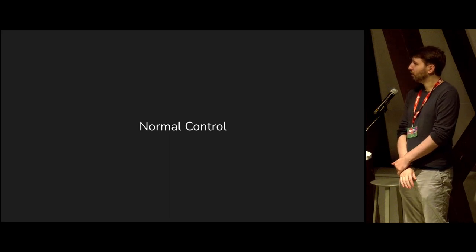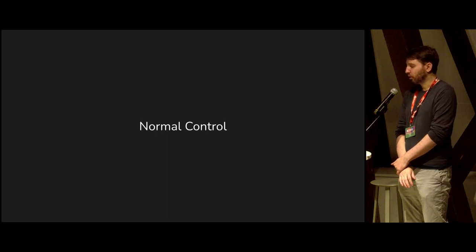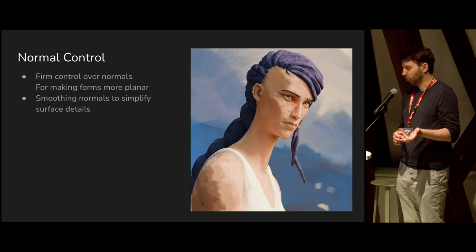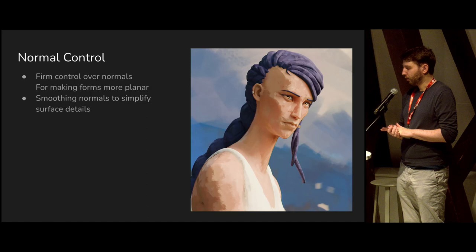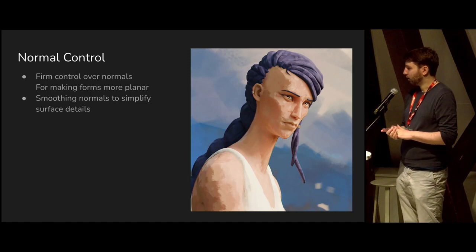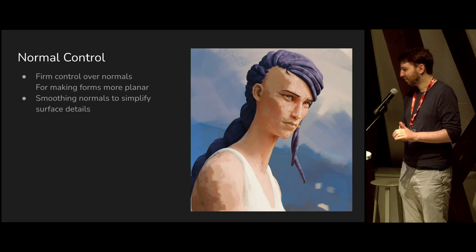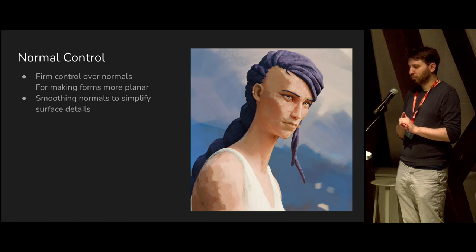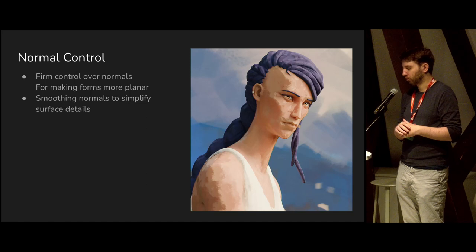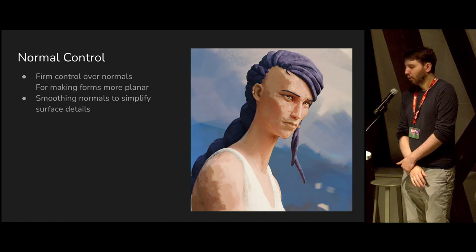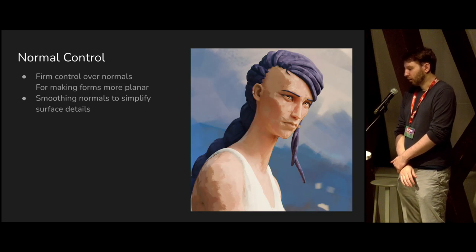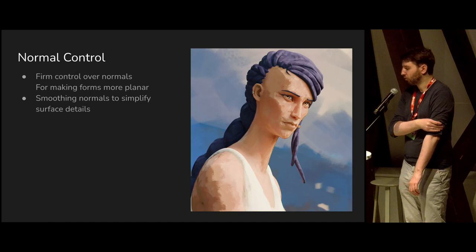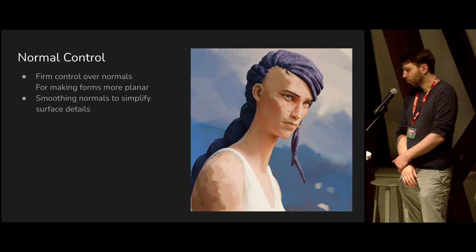The second Cycles topic is much more vague — it's normal control and more general stylized shading. For a painterly style, you might want to make normals flatter, more planar in certain areas, so it looks more like brush strokes, which tend to be flatter than a smooth gradient. You might also add surface detail along shadow edges to make them look jaggy or apply some texture pattern. Normals are a big way of controlling that kind of thing.